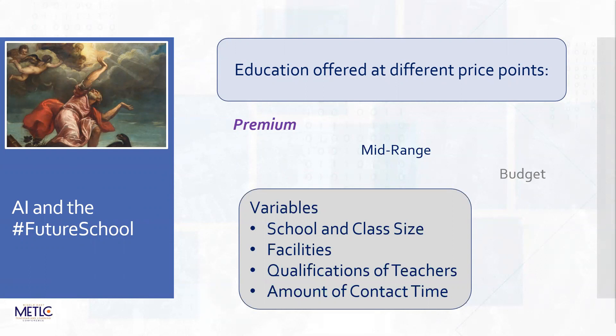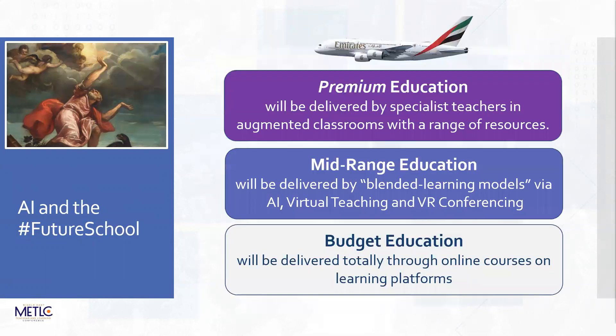The variables tend to be class sizes, the facilities available, the extracurricular activities, the qualifications of teachers and the amount of contact time. These are the factors that are going to drive education over the next 20 to 30 years. We could look at three versions: a premium education delivered as we're used to, with a teacher in front of the class; a mid-range education with a blended model using face-to-face and distance learning and AI-based systems; and budget education which is pretty much wholly online. Those of you in the Middle East are really driving this - the UAE and the Middle East are way ahead of the rest of the world on this.